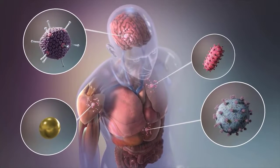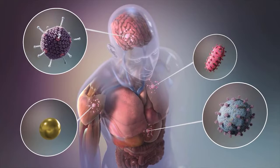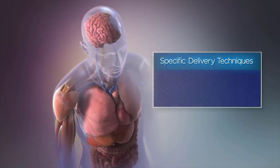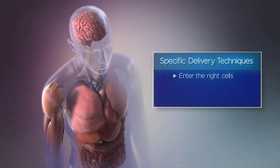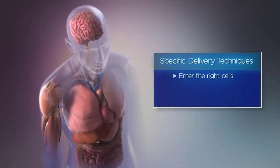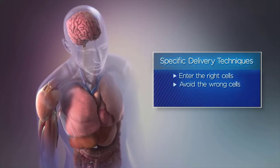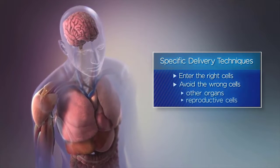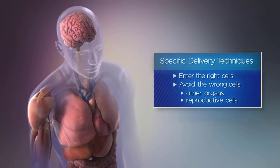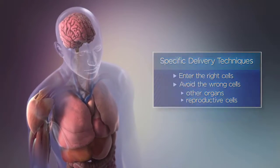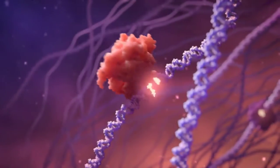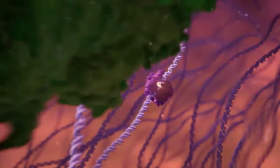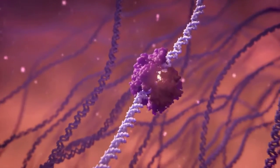will require tailored delivery techniques and packages. The delivery techniques must be specific to enter the right cells and avoid the wrong ones, such as the cells of other organs or reproductive cells like eggs and sperm. Additionally, different types of editing tools may be needed to correct different types of mutations.